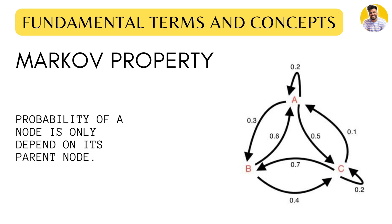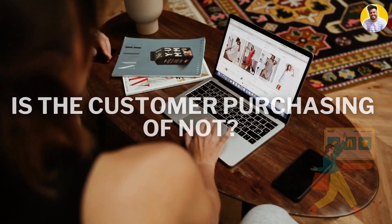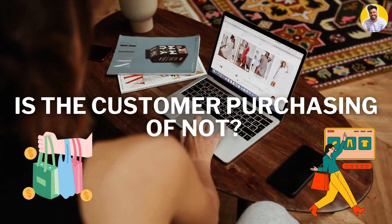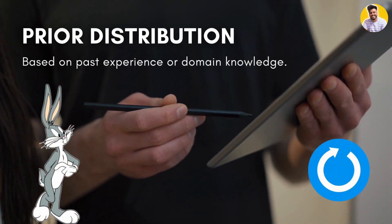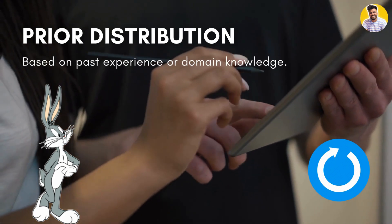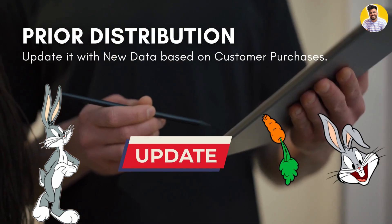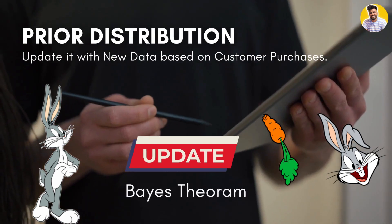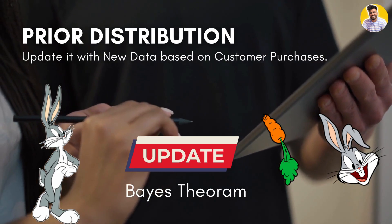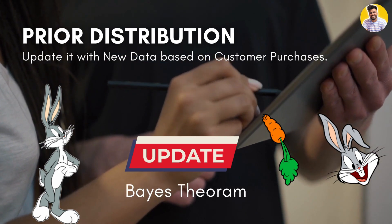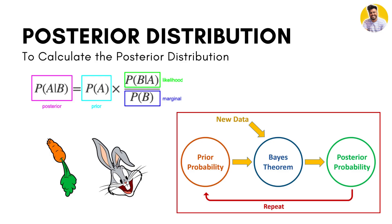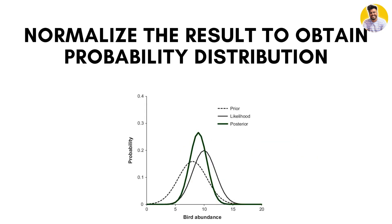Let's walk through the example of a customer making a purchase or not. We start with the prior distribution, which represents our beliefs about the probability of a customer making a purchase before we have seen any data. This prior distribution can be based on past experience or domain knowledge. Next, we update our prior distribution with new data using Bayes' theorem, which allows us to calculate the posterior distribution — our updated beliefs about the probability of a customer making a purchase given the new observed data. To calculate the posterior, we multiply the prior distribution by the likelihood function, which measures the probability of the observed data given the model parameters, then normalize the result.